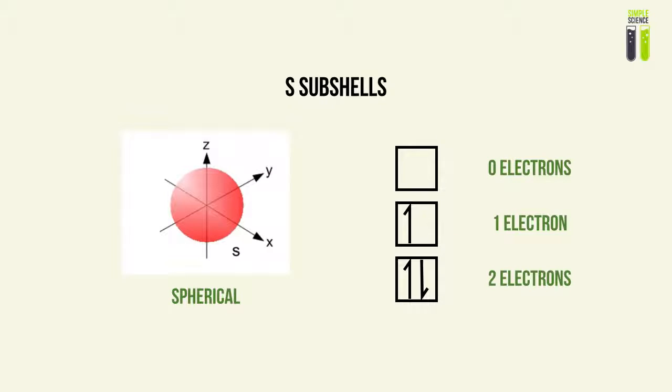Let's look closely at the S subshell. The S subshell describes a spherical region that can occupy a maximum of 2 electrons. In this course, we represent a subshell as a square box, and the electrons are represented as ticks. An S subshell can be occupied by 2 electrons, so we can contain a maximum of 2 ticks within our square box.